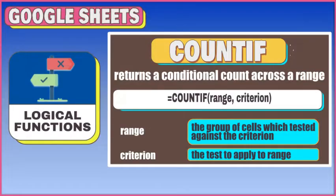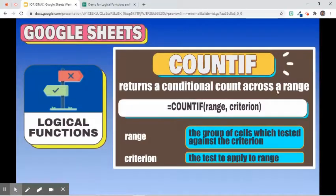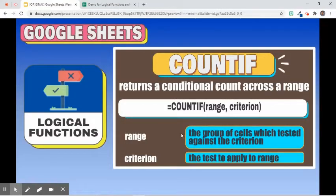The next function is COUNTIF. It returns a conditional count across a range. Its syntax is: =COUNTIF(range, criterion). The first argument is the range tested against the criterion, and the second argument is the criterion — the test to apply to the range.